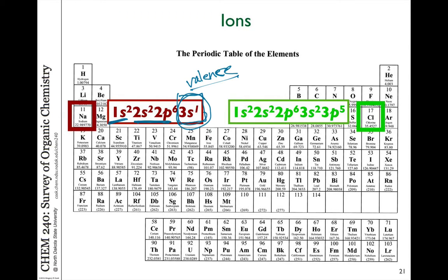That's the one we're talking about in terms of reactivity. Look at chlorine all the way on the right. Notice that the 1s shell is filled, the 2s and 2p energy level is filled. Now the third energy shell has a filled s orbital, but the p orbital only has 5 electrons, so it needs one more electron to be satisfied.